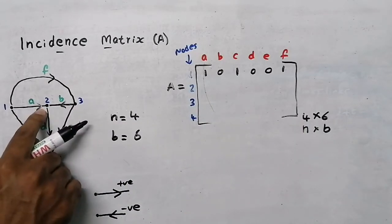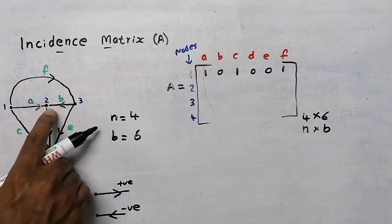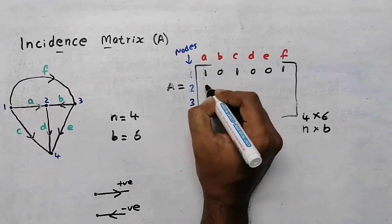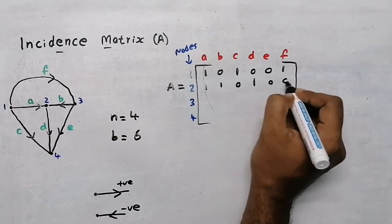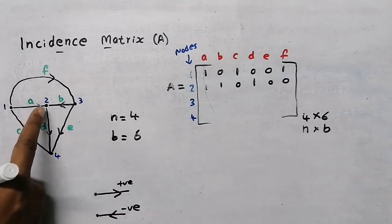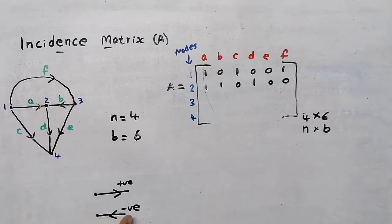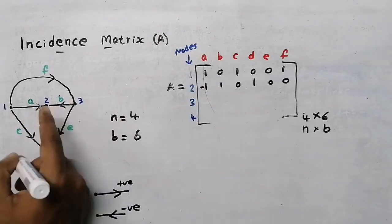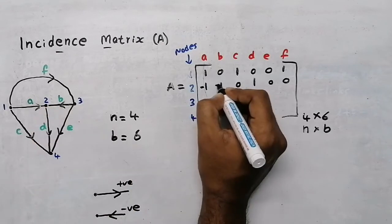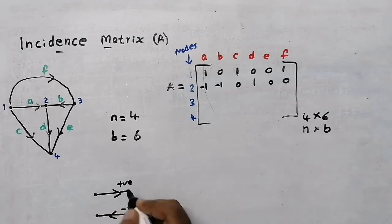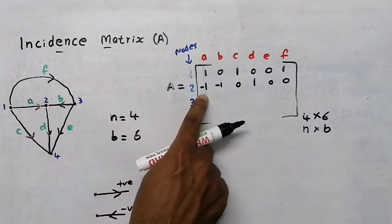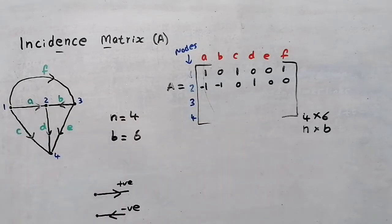Now take node 2. At node 2, branches a, b, and d are connected. Near a, b, and d put 1, and the remaining put 0. For the sign: branch a is coming into node 2, so it is negative (−1). Branch b is also coming in, so it is also negative (−1). Branch d is going away from node 2, so it is positive (+1).